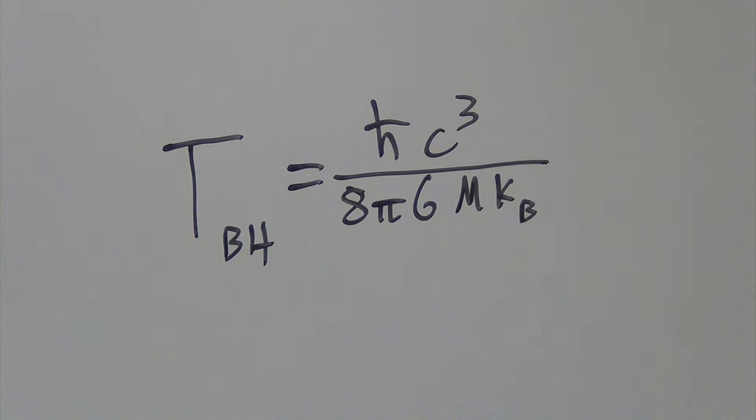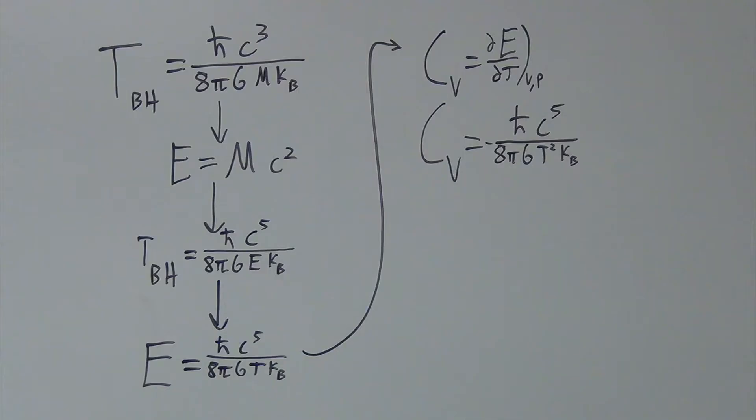As a black hole loses mass, it actually increases its temperature. This is odd, but not the strangest result that thermodynamics offers. We can calculate the specific heat of the black hole by using Einstein's famous expression for energy, substituting it into our equation, and then taking the temperature derivative of the energy.